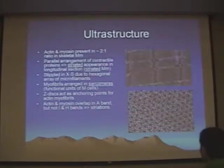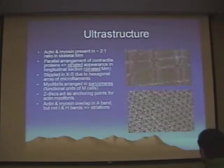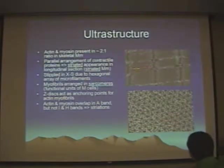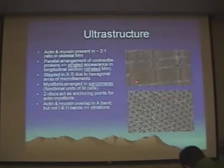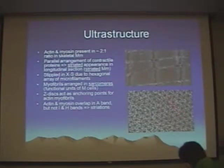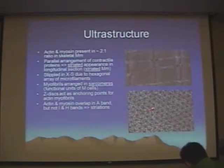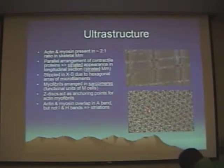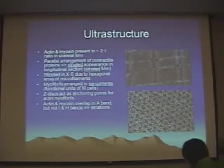If you look at an electron micrograph, you can see the individual sarcomeres, which are made up of the actin and myosin fibers. If you were to look at this in cross-section, the large myosin fibers are surrounded by the smaller actin fibers.